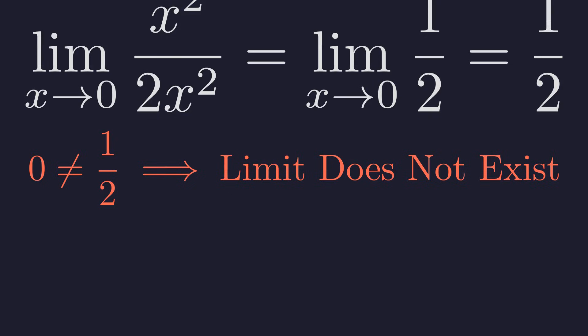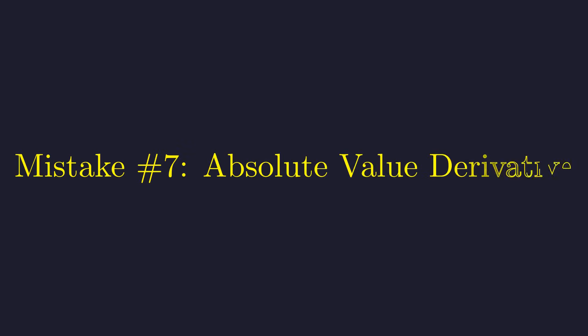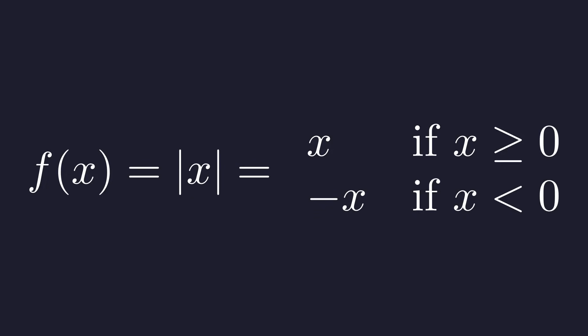Sharp corners on graphs pose a problem for derivatives. Let's examine the most famous example. The absolute value of x is defined as x for non-negative values and negative x for negative values. This definition gives us the characteristic V-shape. At the origin, the derivative is the slope. What is the slope at x equals zero? From the left, the function is y equals negative x, so the slope is negative one. From the right, the function is y equals x, so the slope is positive one.